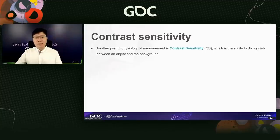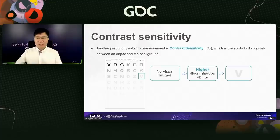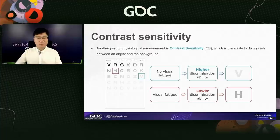Another psychophysiological indicator we use is contrast sensitivity, which is the ability to distinguish between an object and the background. A traditional method to measure it uses a chart where characters gradually fade from black to grey. When not tired, I can distinguish a slightly darker letter from the background. However, when tired, I can only see a much darker, higher-contrast letter. So we can infer the severity of visual fatigue from changes in contrast sensitivity threshold.